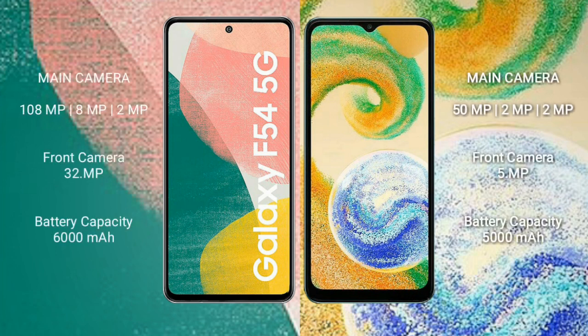Samsung Galaxy A54 rear triple camera setup: 108MP plus 8MP plus 2MP, and front camera 32MP. Samsung Galaxy A4s rear triple camera setup: 50MP plus 2MP plus 2MP, and front camera 5MP.